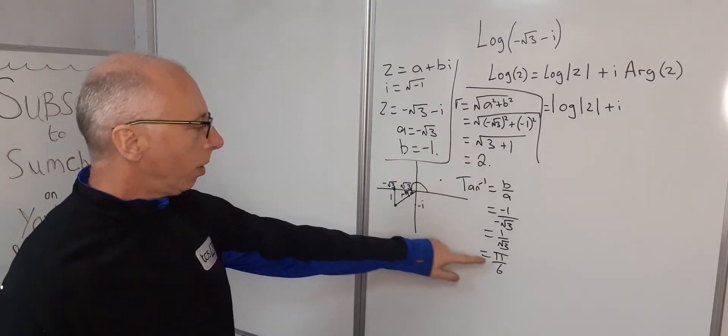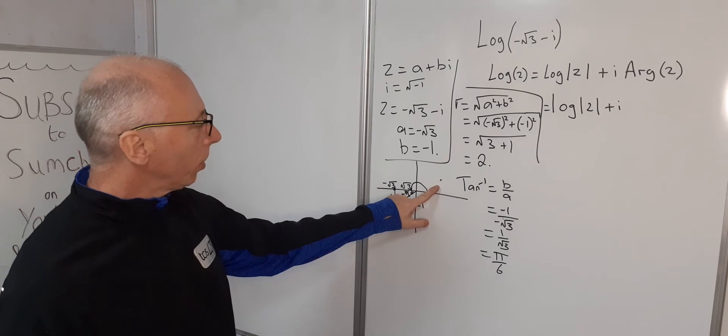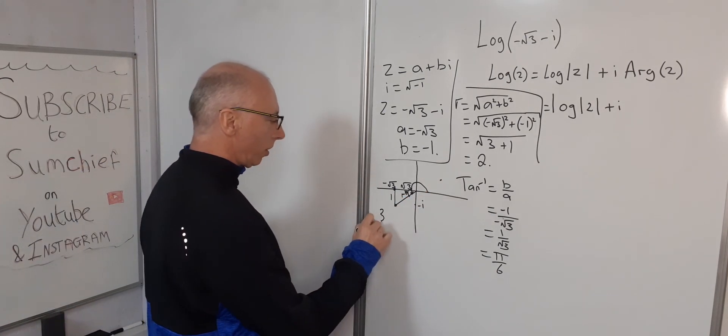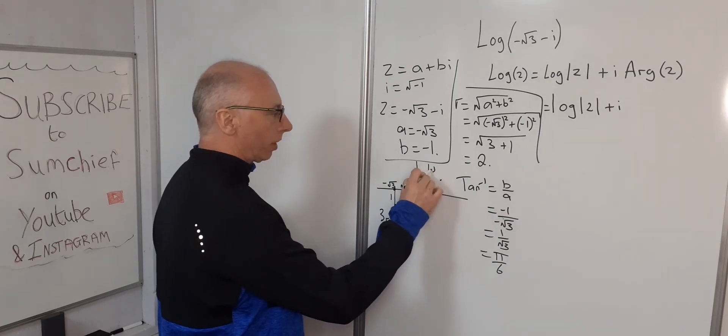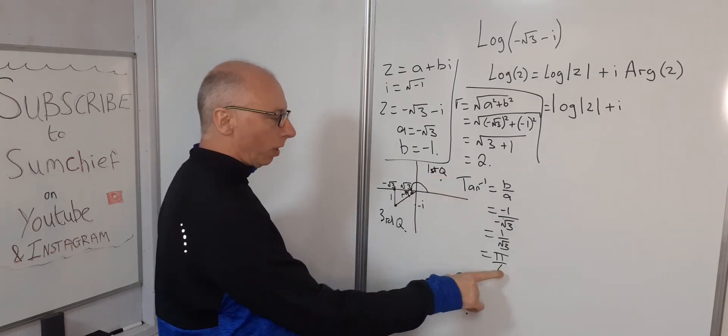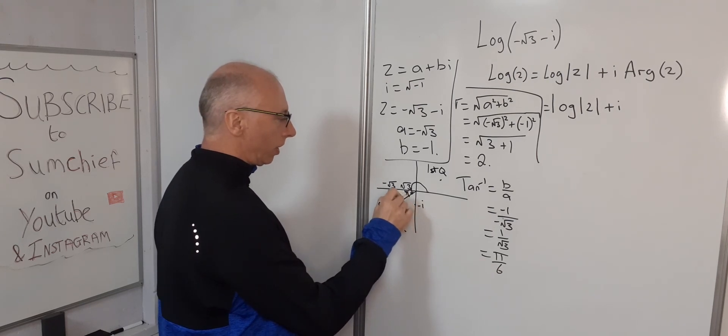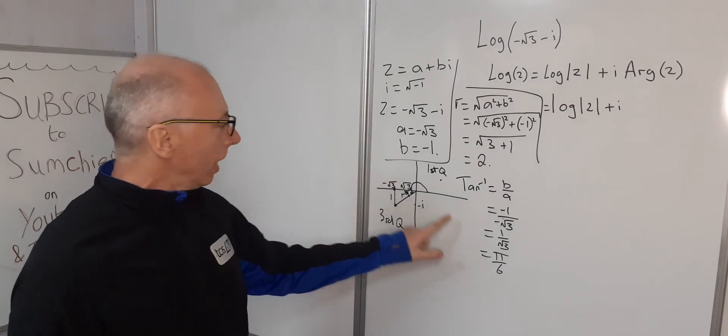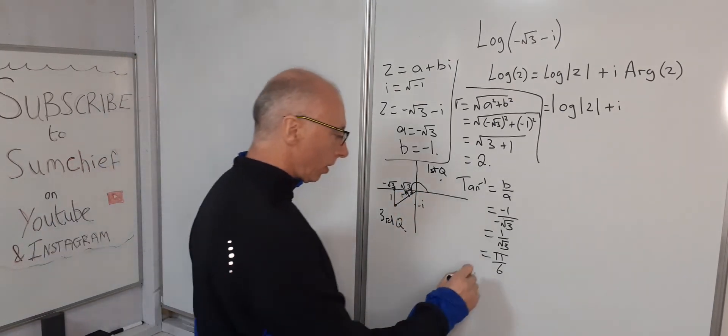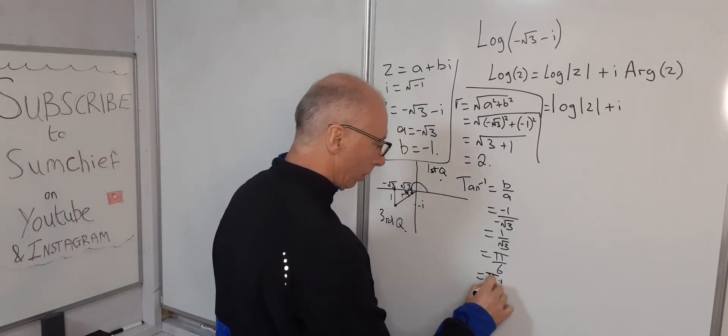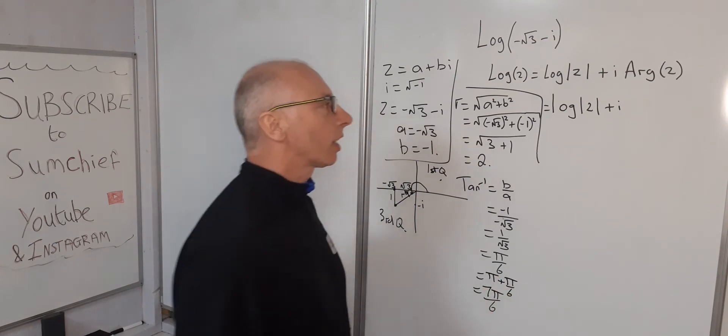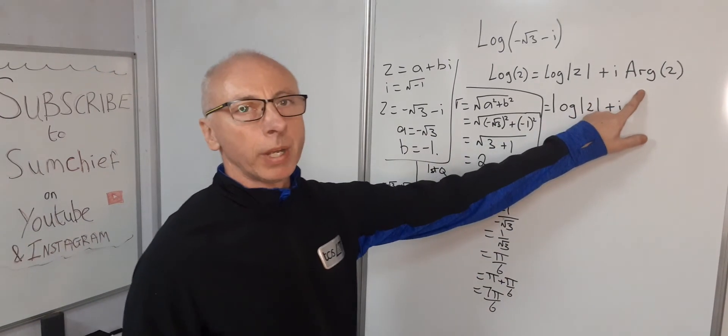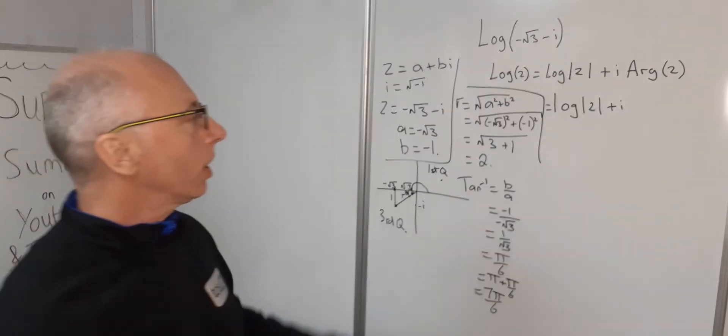But as you can see, pi over 6 would put us in the first quadrant. We need to be in the third quadrant. This is the first quadrant. So what we need to do now is to work out what this angle is all the way from here, plus this little theta here. So basically we're going to add on pi, one pi turn. So it's pi plus pi over 6, which equals 7 pi over 6. So now we can put in our argument, 7 pi over 6.